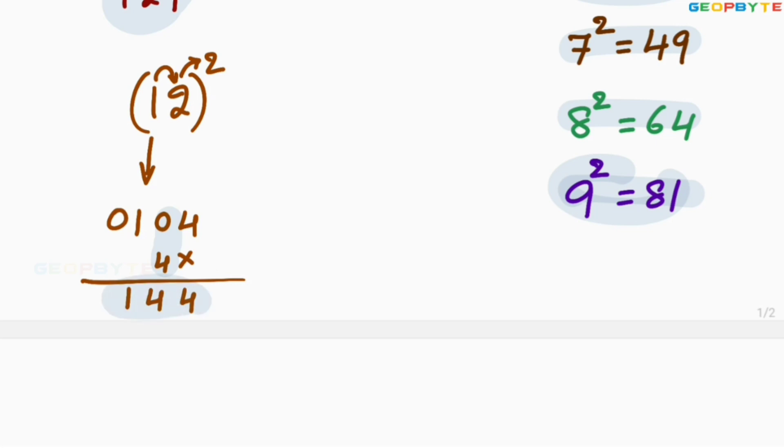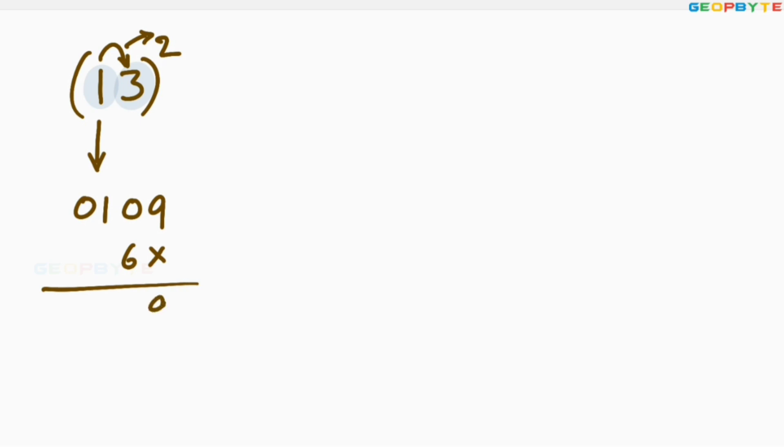I hope you clearly got my point. Let us take the 13 square. First write the square of 1: square of 1 is 01. 3 square is 9, write as 09. Then multiply 1 with 3: 1 into 3 is 3, 3 into 2 is 6. Leave the first space, write that 6 here. Add these two values: 9, 6 plus 0 is 6, 1. So 13 square is equal to 169.